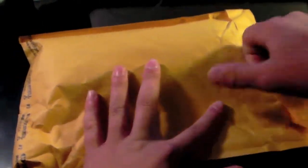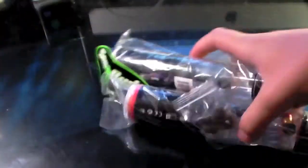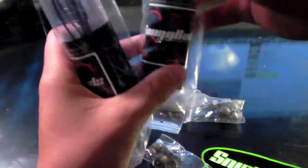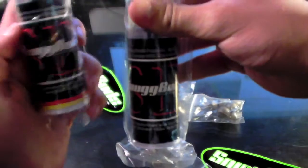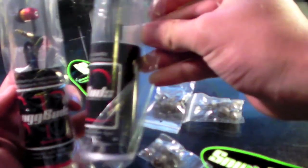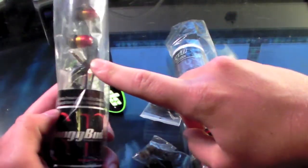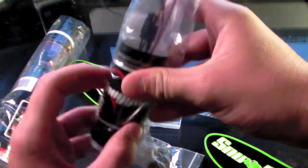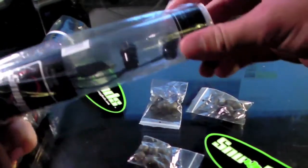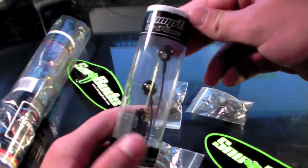Alright, so it looks like we have two pairs - the Snug Pumped and the Snug Buds Pumped for the iPhone. I believe these ones have a braided cable without a mic, and these ones don't have a braided cable but they do have an inline mic and the iPhone headset jack.